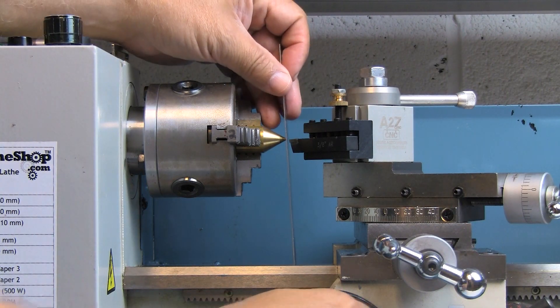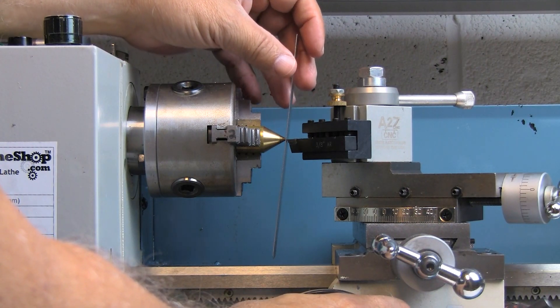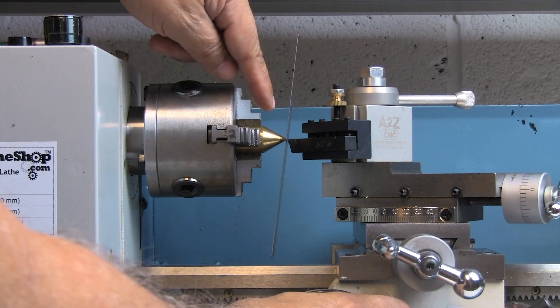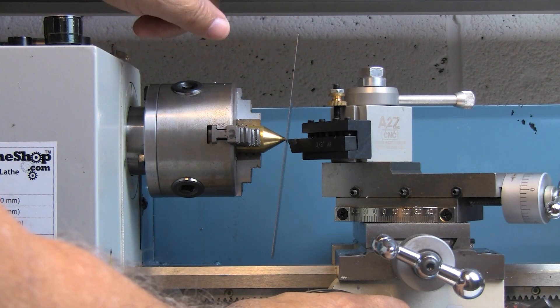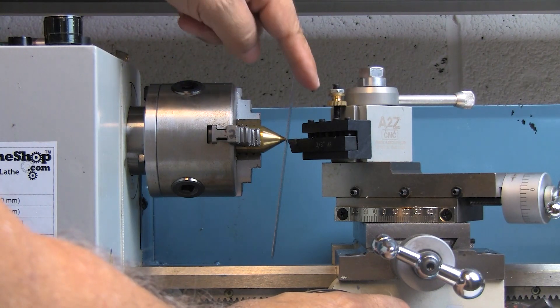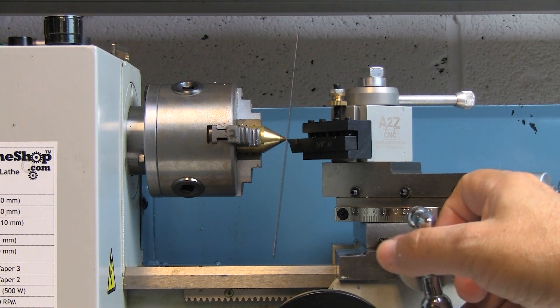And that is to insert a straight edge right against the tip. You can see that when the two come together, the ruler is actually tilted toward the tailstock. That means that the holder is a little bit too low.